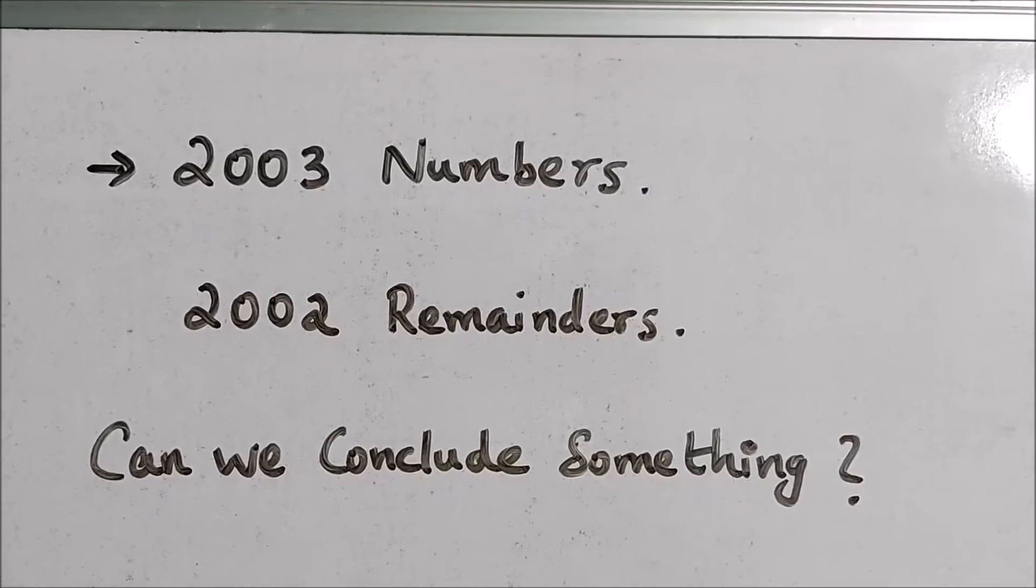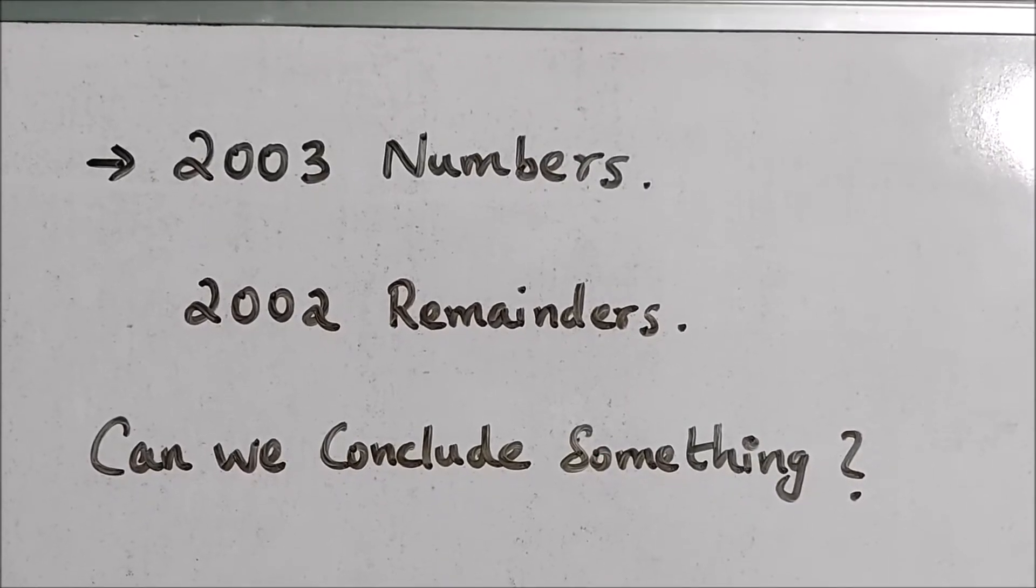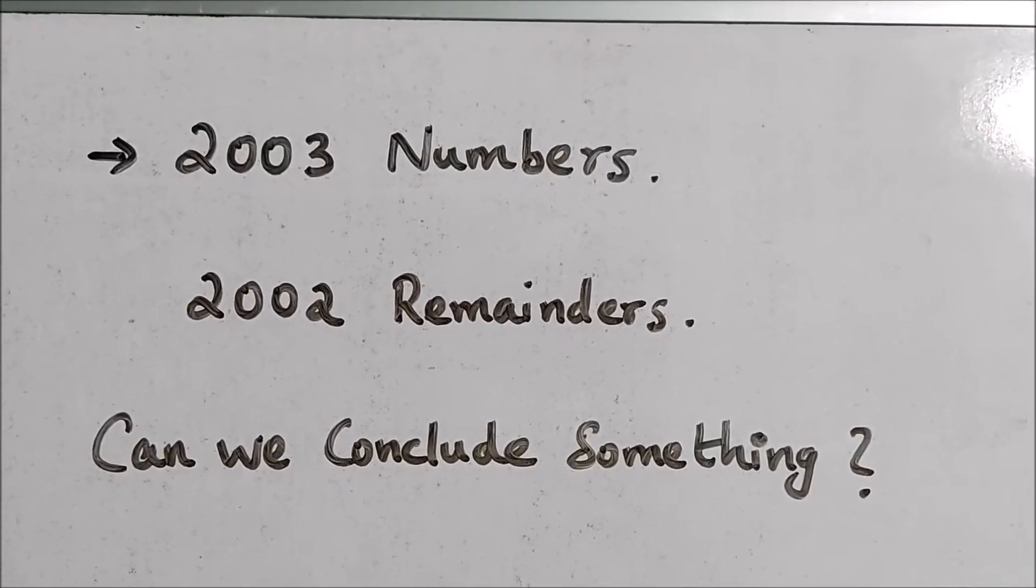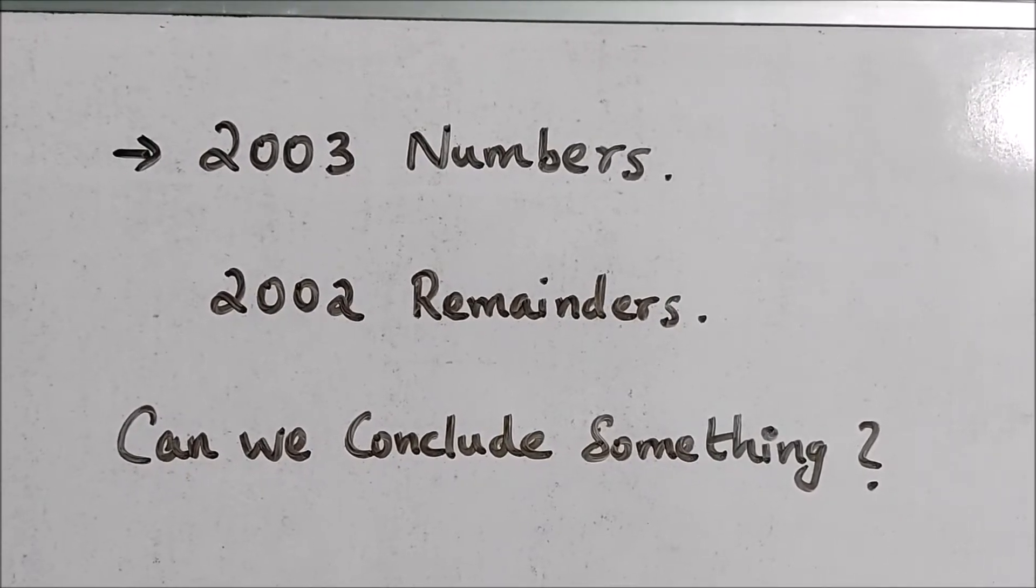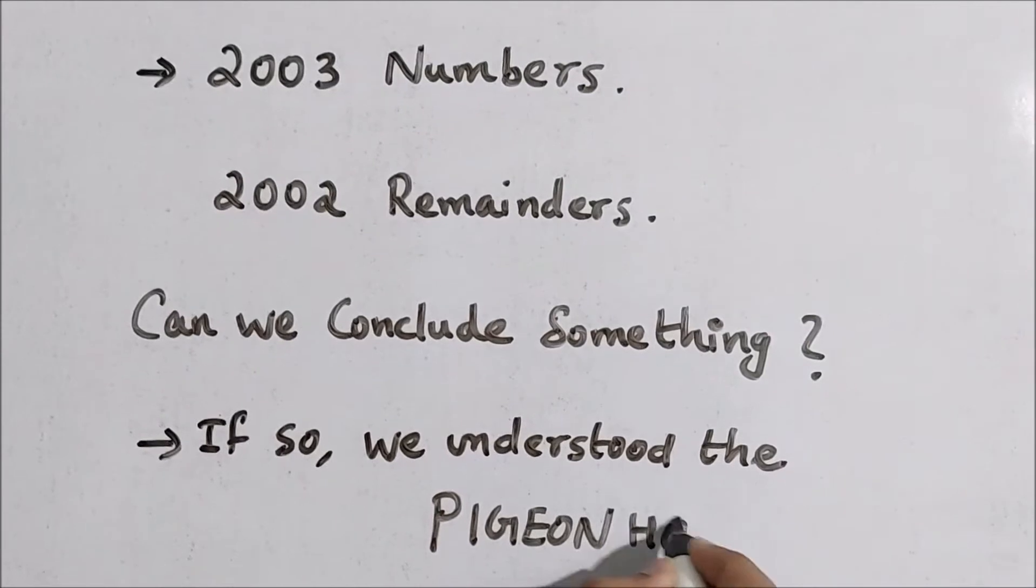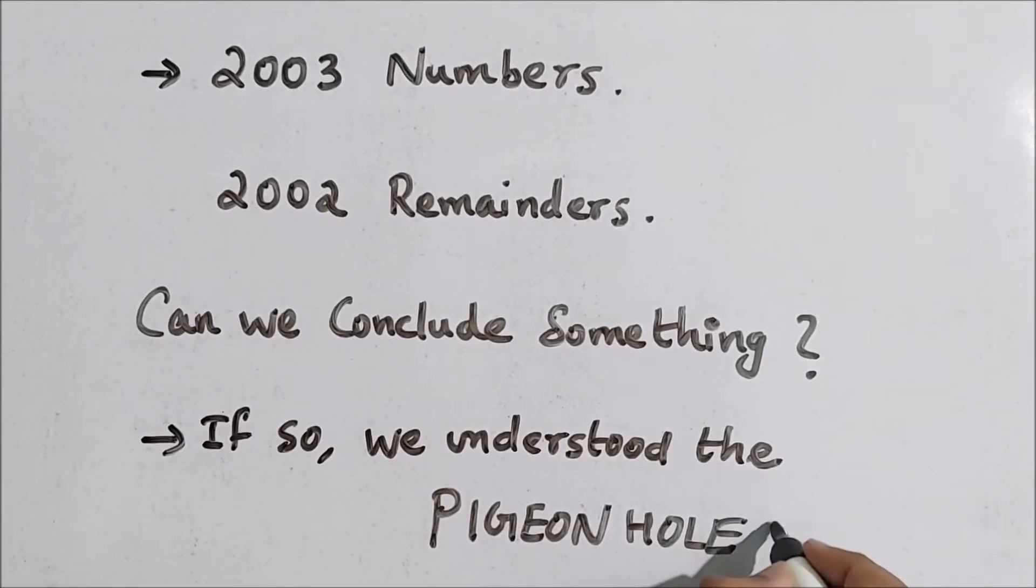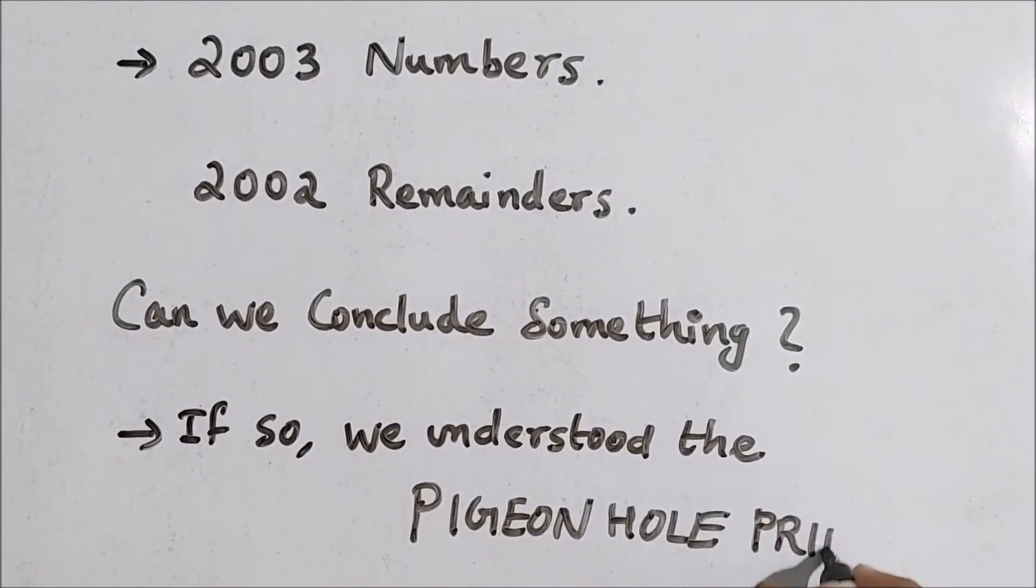Now we have these 2003 numbers from the sequence and 2002 possible remainders. Can we conclude something? If you are able to conclude something, it means that we understood the pigeonhole principle.